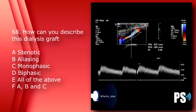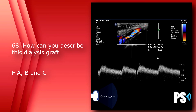Number 68: How can you describe this dialysis graft? A) stenotic, B) aliasing, C) monophasic, D) biphasic, E) all of the above, or F) A, B, and C. The answer is F, A, B, and C — there is stenosis, there is aliasing, and the waveform is monophasic.